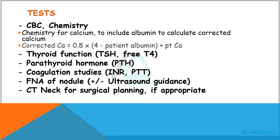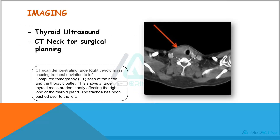The tests and investigations we need to perform include complete blood count, blood chemistry, thyroid function levels to assess thyroid stimulating hormone and free T4 levels, parathyroid hormones, coagulation studies, fine needle aspiration of the thyroid with or without ultrasound guidance, and a CT scan of the neck for surgical planning if appropriate. We also need a thyroid ultrasound. For our patient, a CT scan demonstrated a large right thyroid mass causing tracheal deviation to the left, predominantly affecting the right lobe of the thyroid gland.